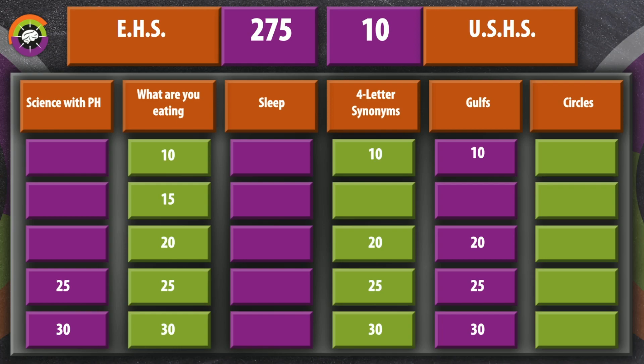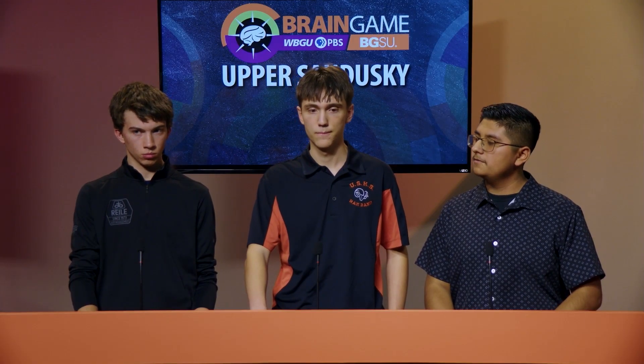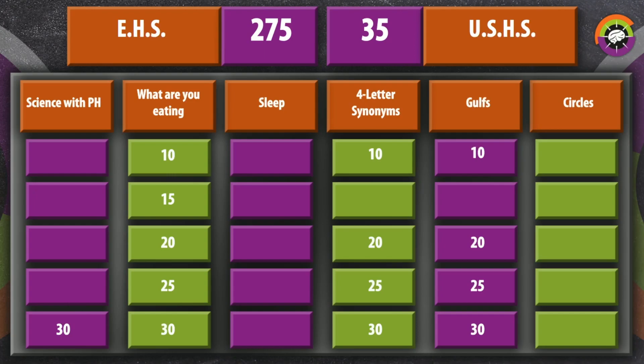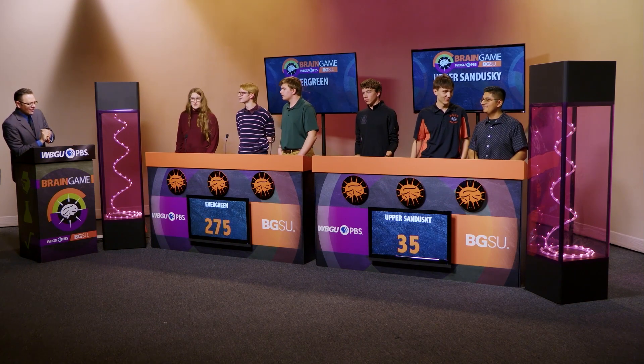Science for 25 points. What term refers to the thin outer layer that forms the visible surface of the sun? Upper Sandusky buzzes in — Sergio answers 'photosphere,' which is correct. Control goes to Upper Sandusky. End of round — Upper Sandusky 35, Evergreen 275. Stay tuned — Brainstorm Round coming up next.